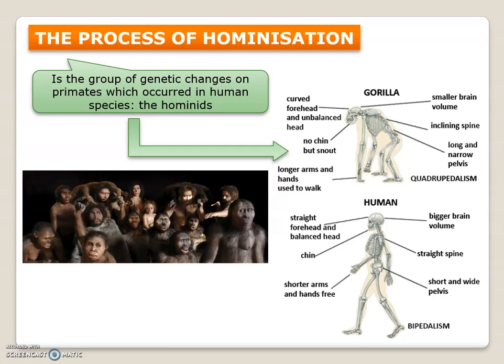From the first hominid four million years ago to our species today — Homo sapiens — all hominids were bipedal. If we look at another primate, for example a gorilla, we can see that we have a lot of differences in our bodies.